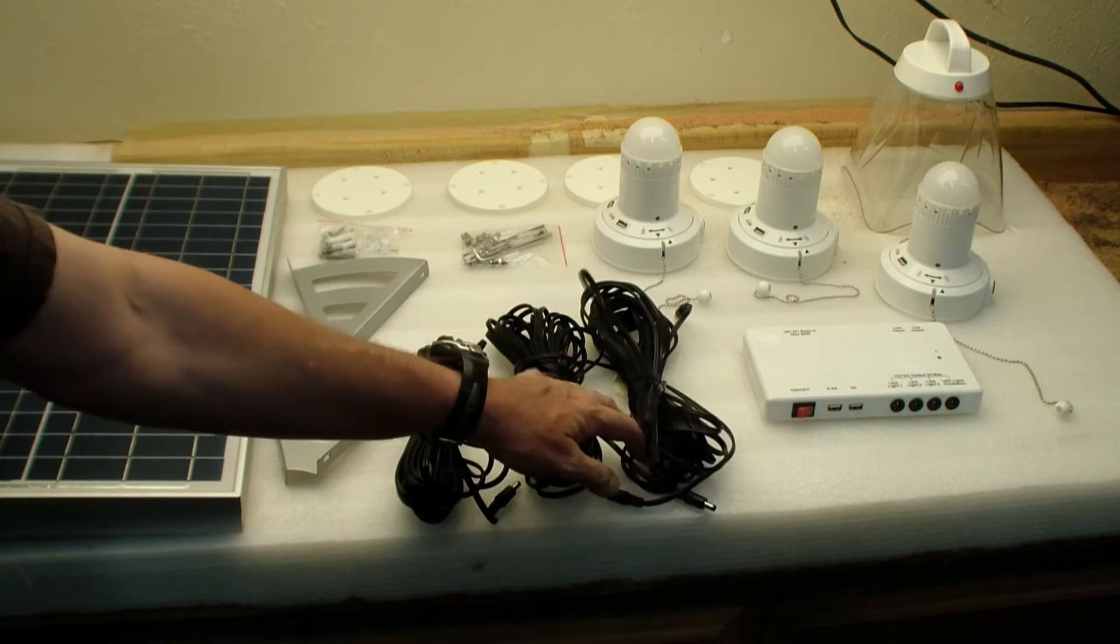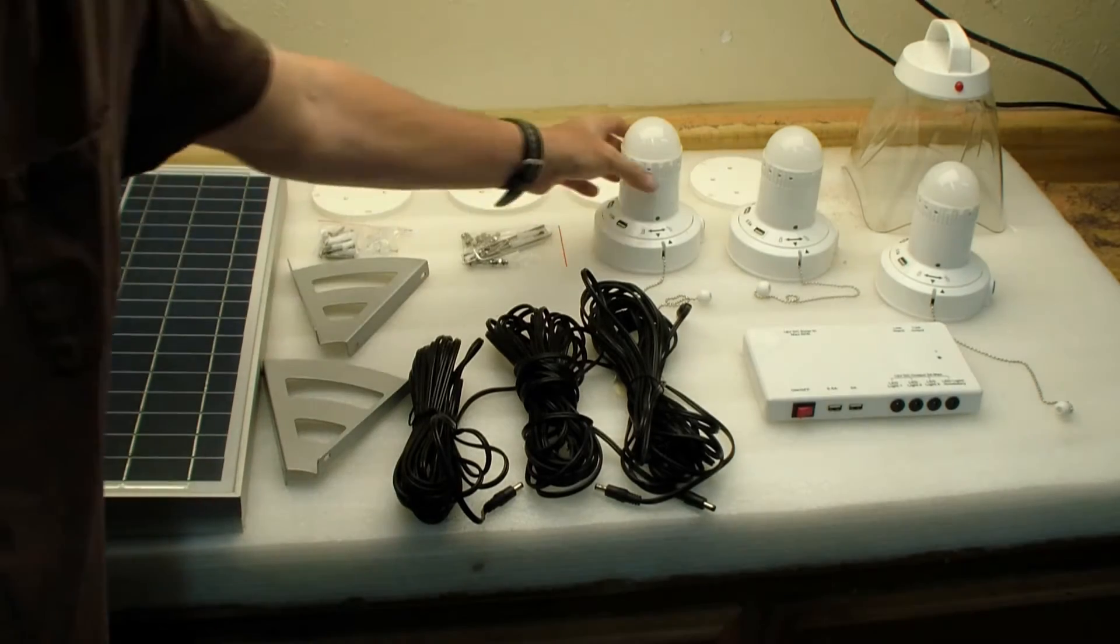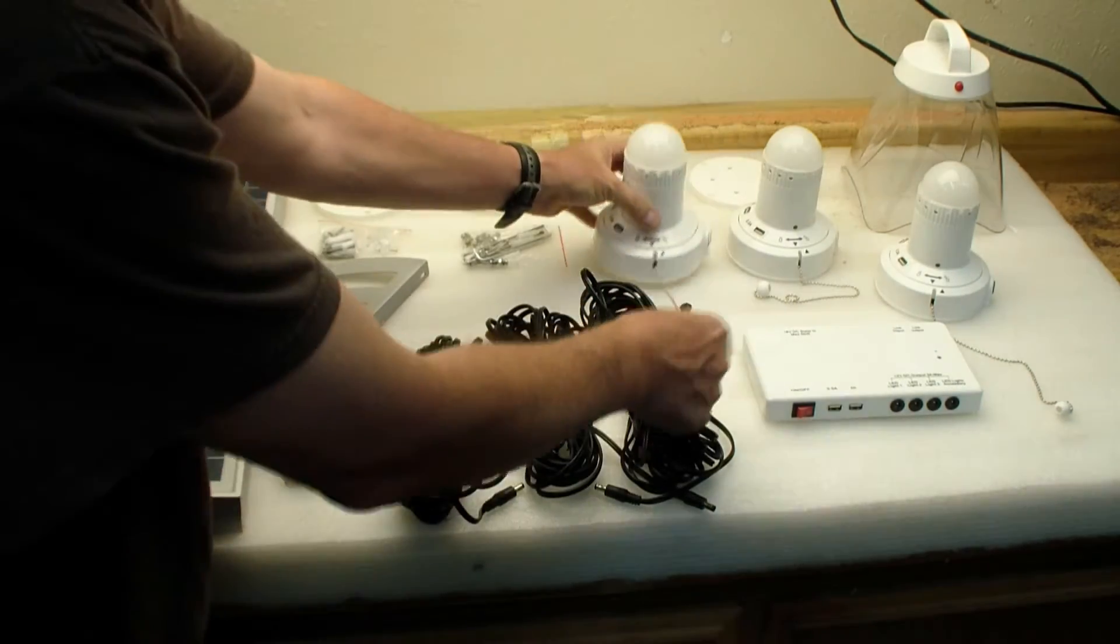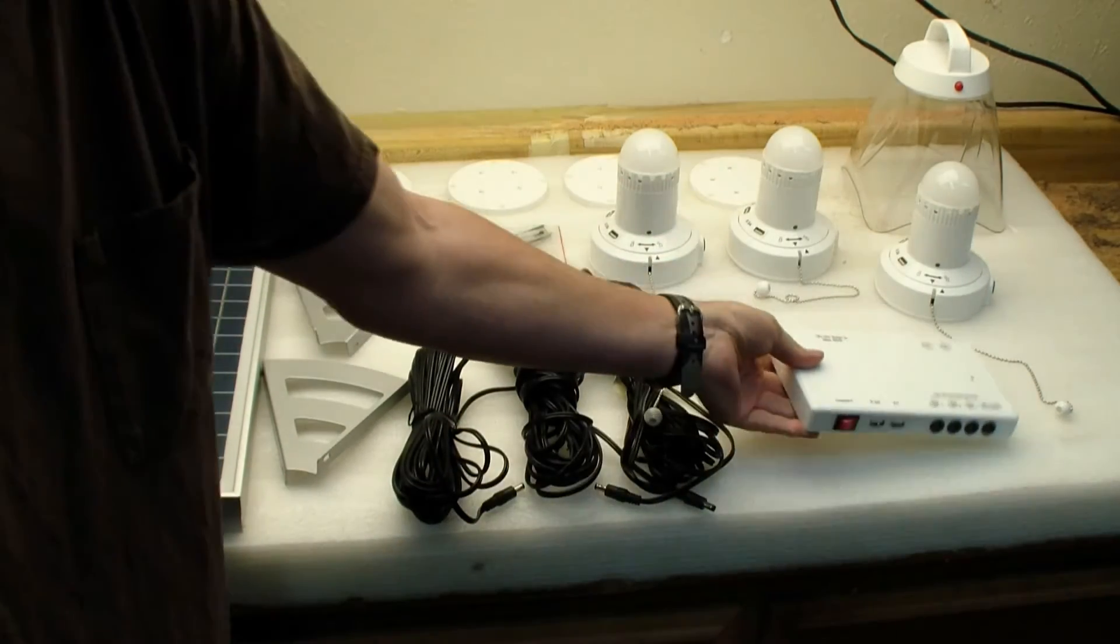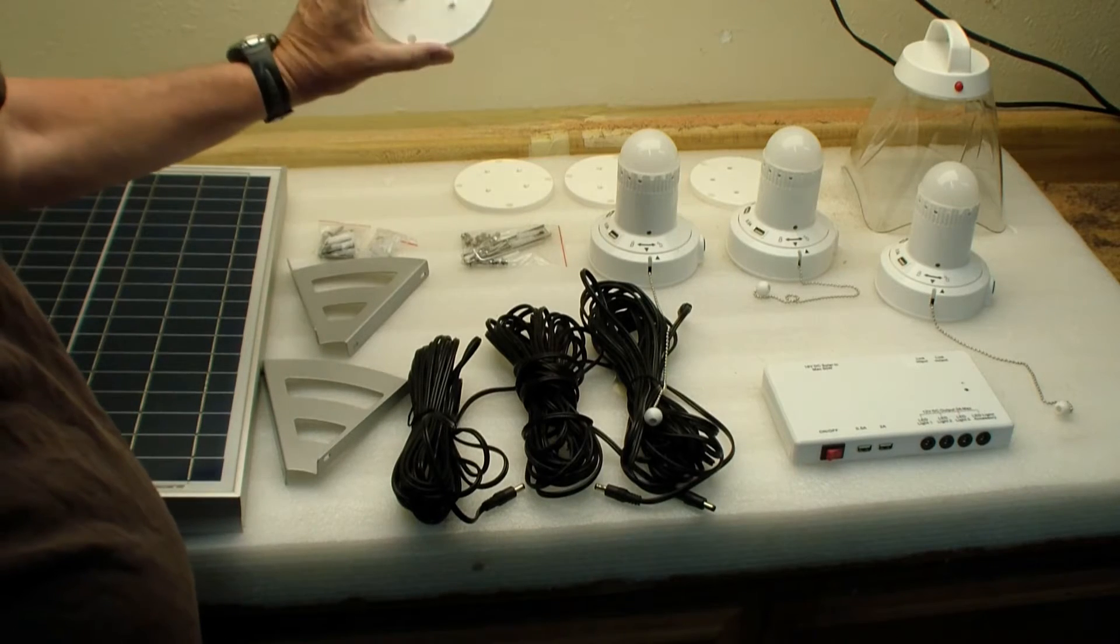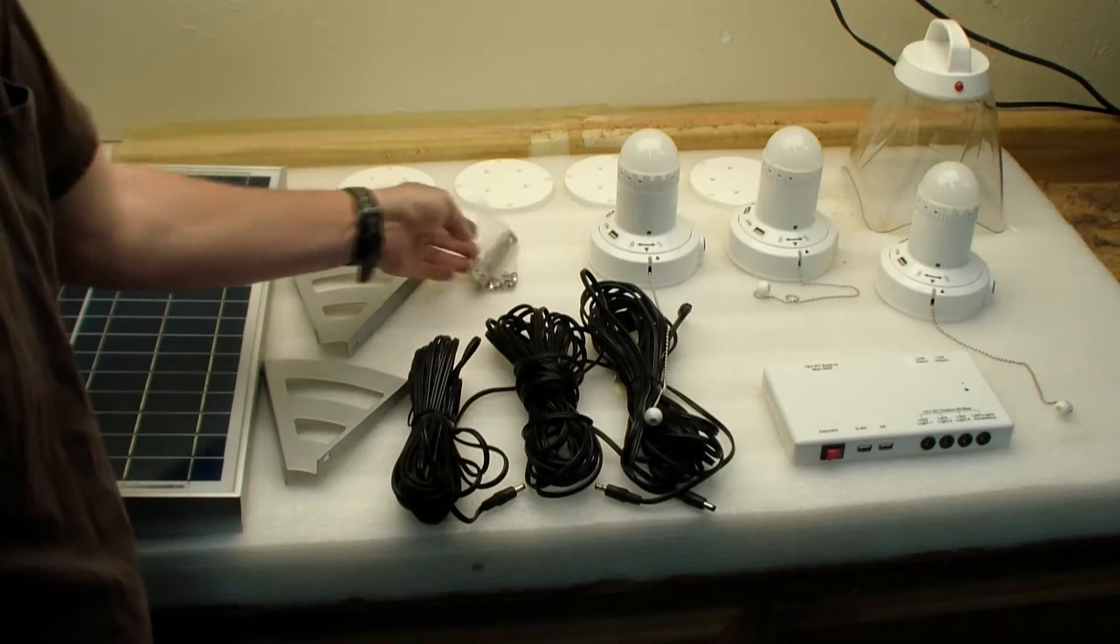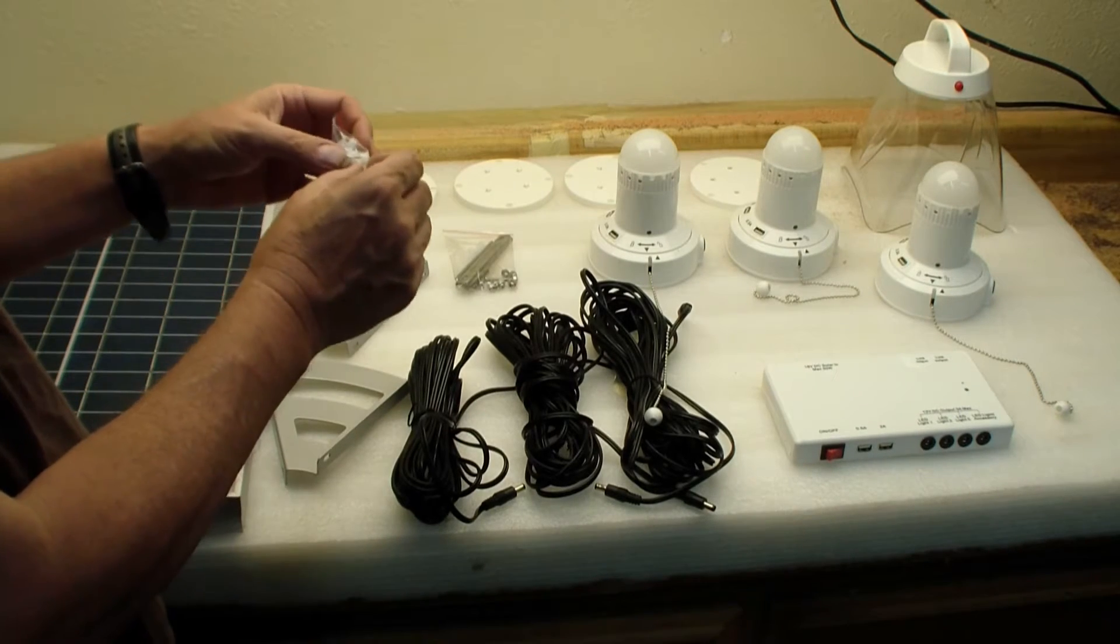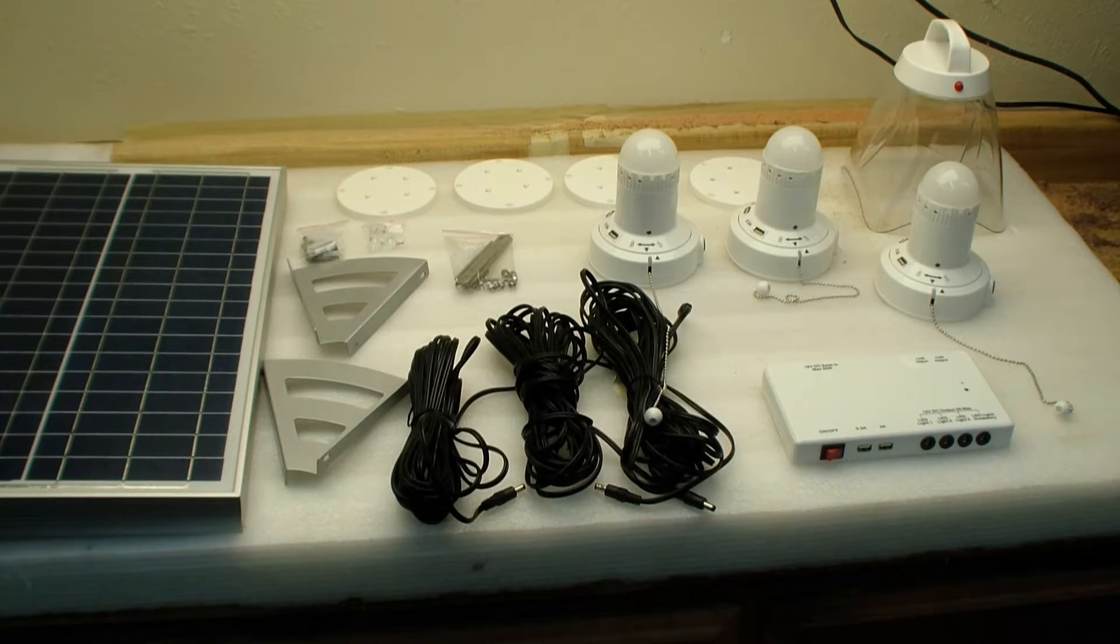We got three sets of cables, each one about 33 feet long or so, maybe 10 meters. We get three emergency light bulbs, a charging unit which has its own battery, four wall or ceiling mounting flanges, a hardware kit that goes with the solar panel with anchor bolts, stainless steel screws, and cable clamps. Let's take a look at all these things in a little bit more detail.